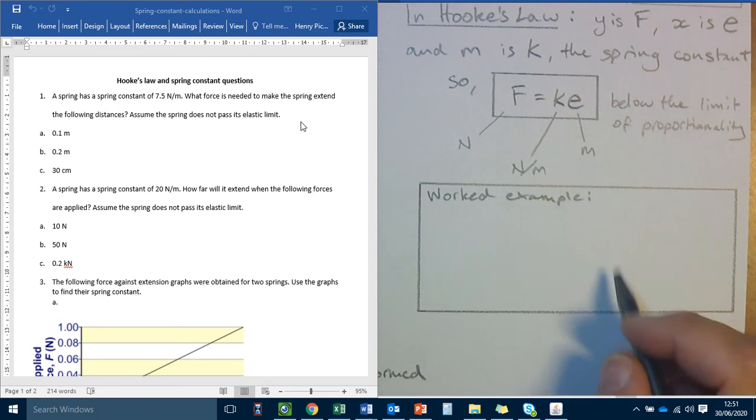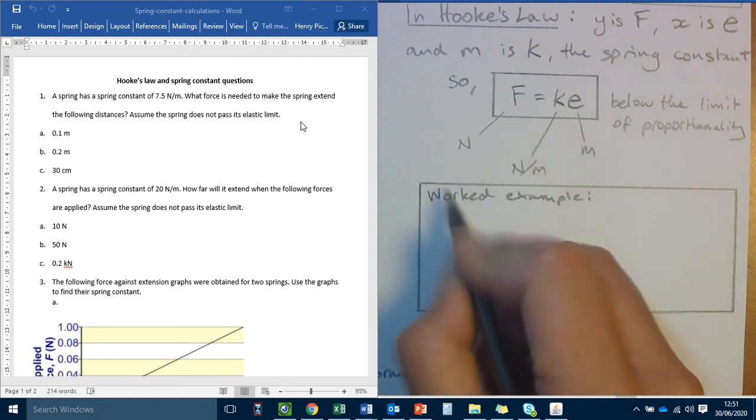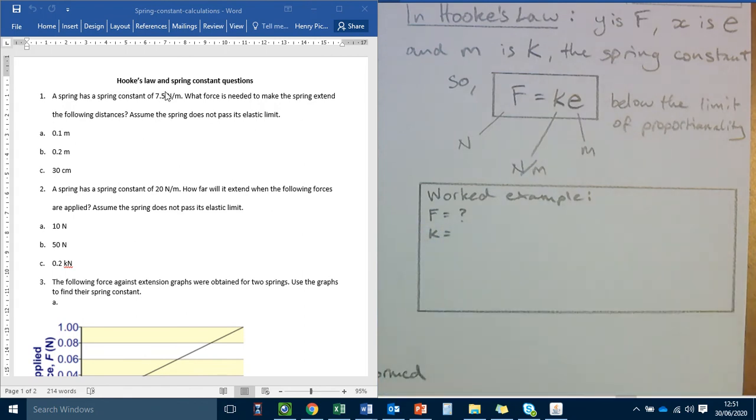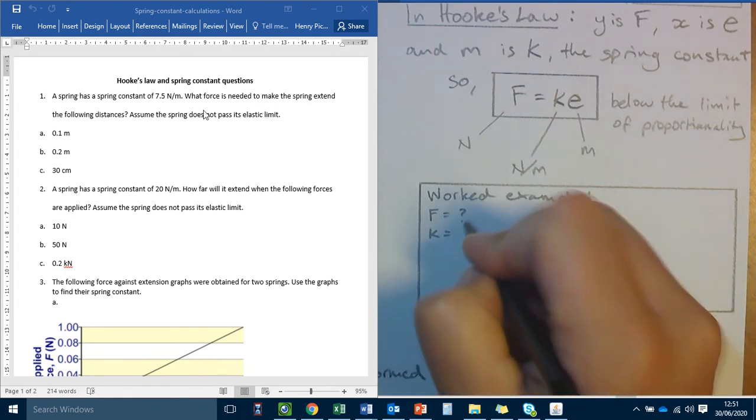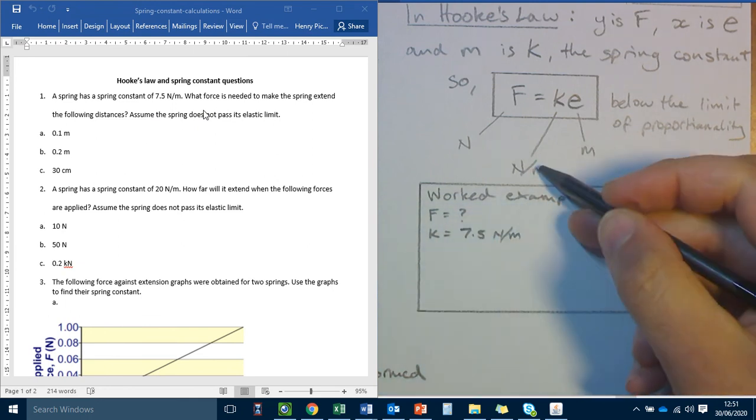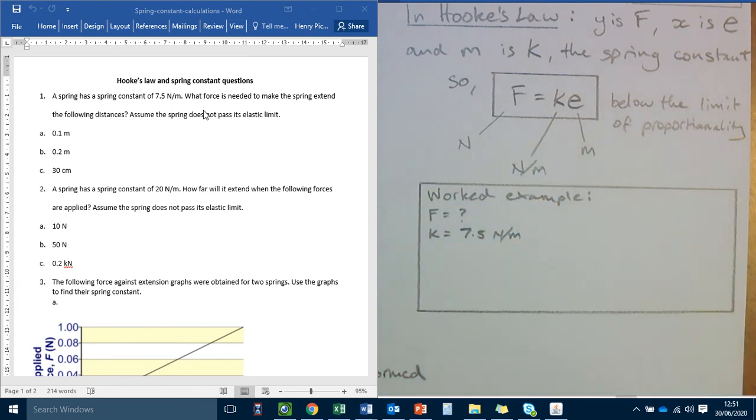So in this question, do we know what F is? No, we're being asked to find it. Do we know what K is? Yes, from here it's 7.5 newtons per meter. And the units are correct for this equation, so I don't need to change anything.